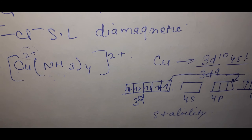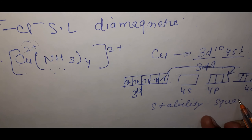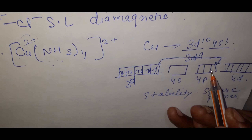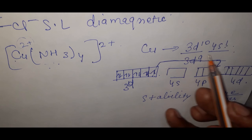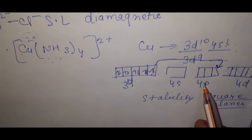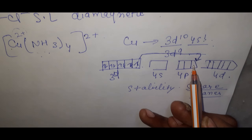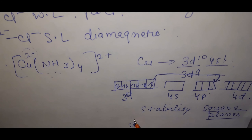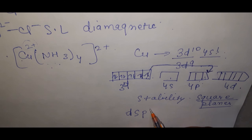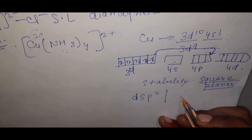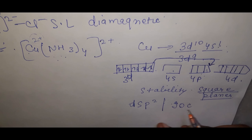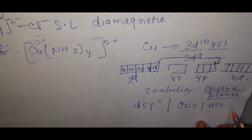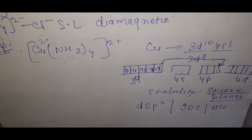[Cu(NH₃)₄]²⁺ has a square planar shape. The hybridization is dsp², making it an inner orbital complex. It shows paramagnetic character due to one unpaired electron in the 3d orbital.